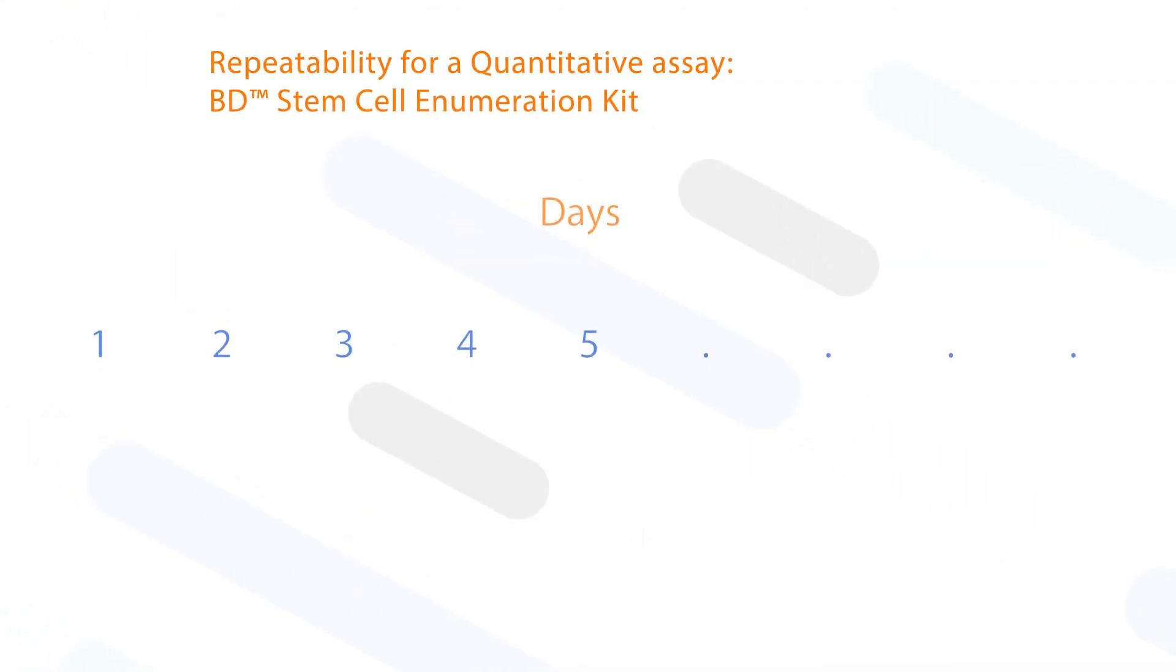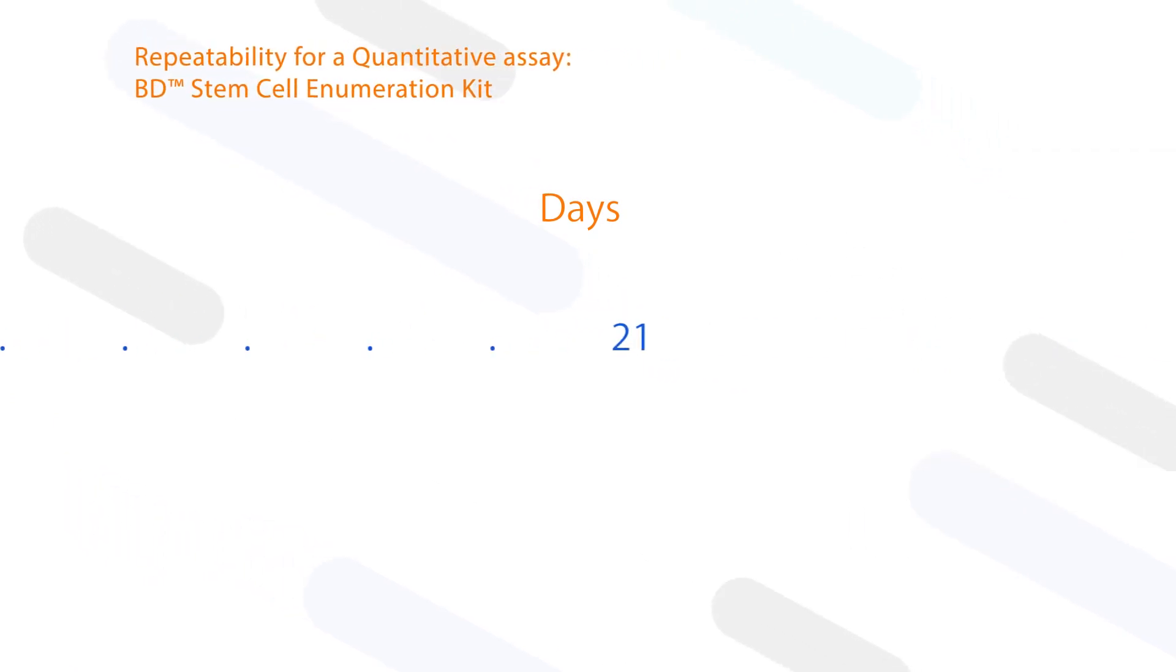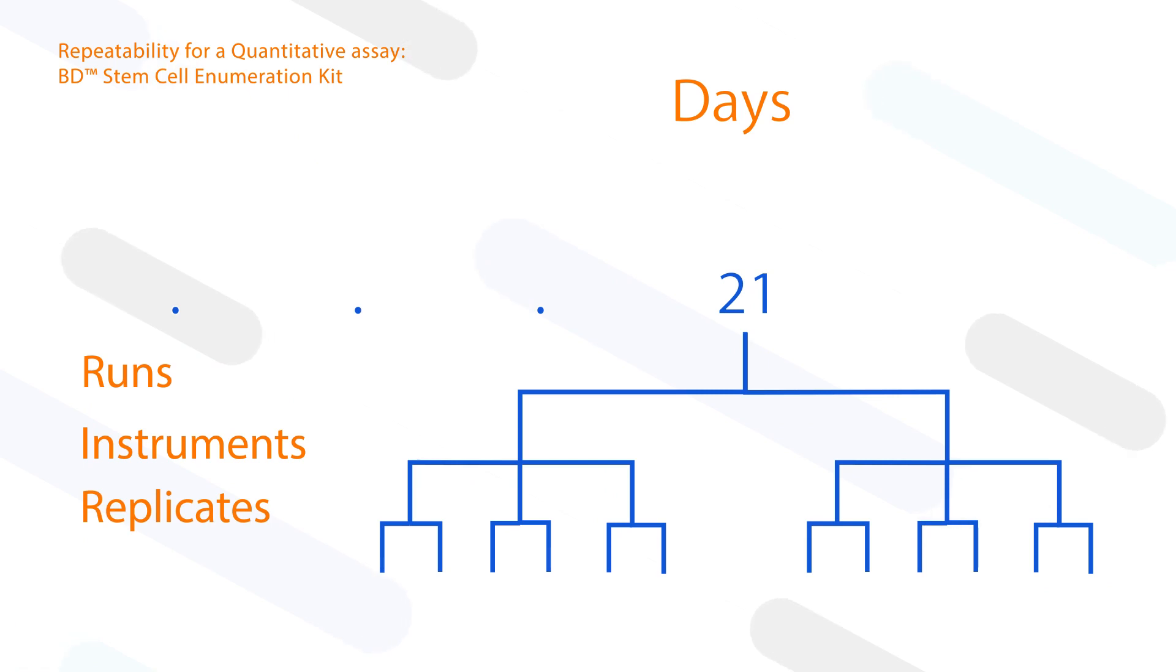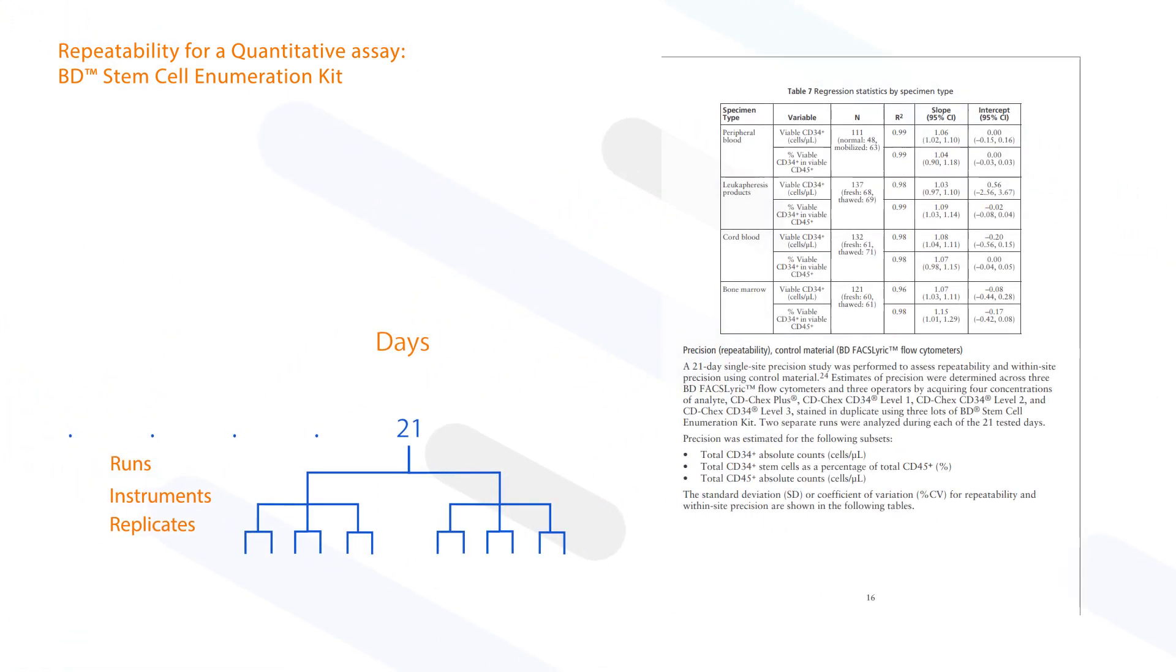For the quantitative BD Stem Cell Enumeration Kit, a 21-day single-site precision study was performed to assess repeatability using control material across three BD FACSLyric flow cytometers with three operators, by acquiring four concentrations of analyte stained in duplicates using three lots of the reagent over two daily runs.